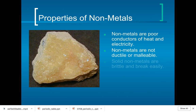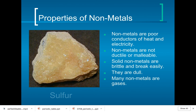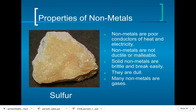Properties of non-metals: non-metals are poor conductors — if you're trying to conduct heat, you want a metal instead. Non-metals are not very ductile; they cannot be drawn into long wires. Solid non-metals are very brittle — you can see sulfur here, which smells like rotten eggs, and if you break it, it's going to be very brittle. They're dull, and many non-metals are gases, though some are solids.